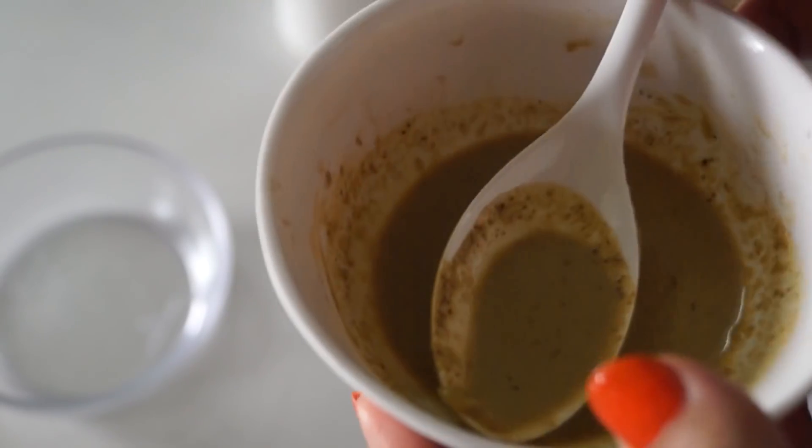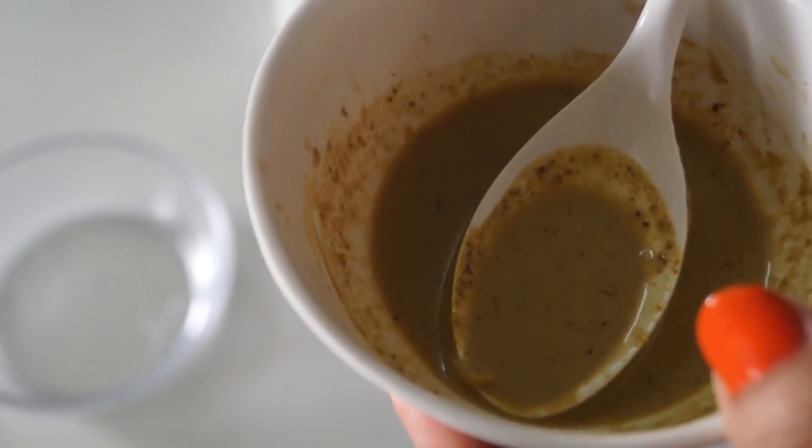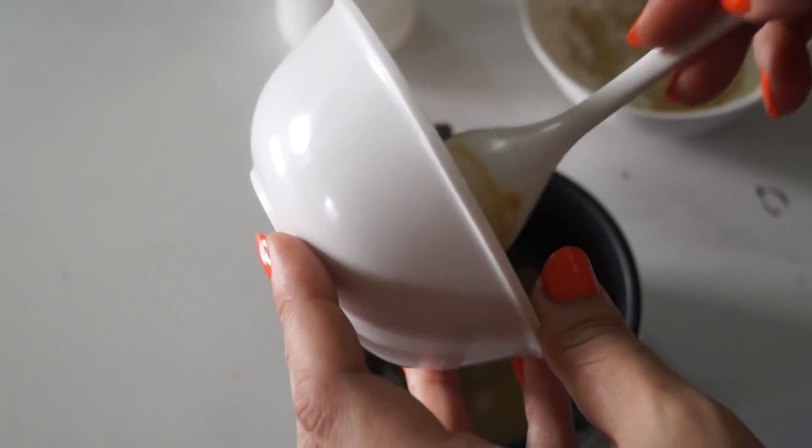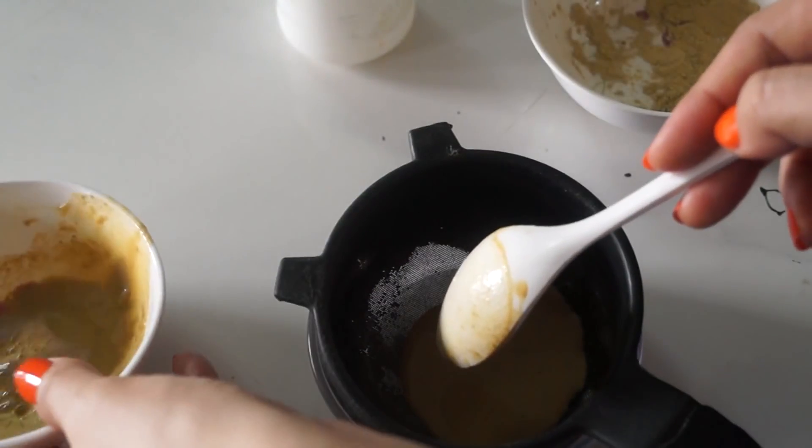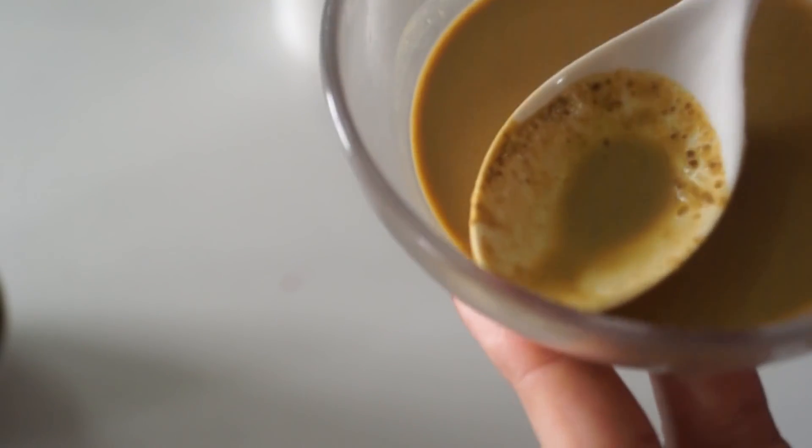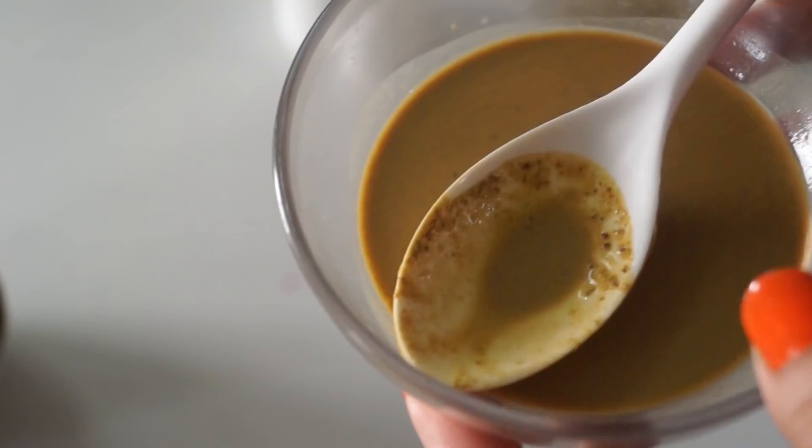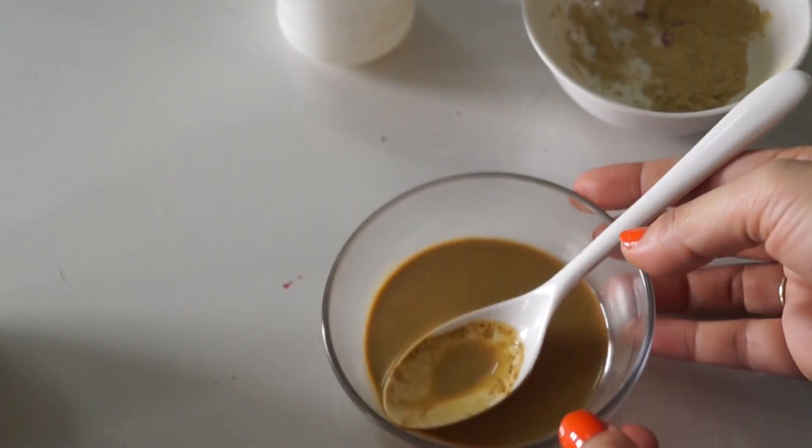So I will filter the solution. You don't want that granular feeling. Here is the blend of pure sandalwood powder, rose water and lemon juice. Now I am going to add the rest of the ingredients.